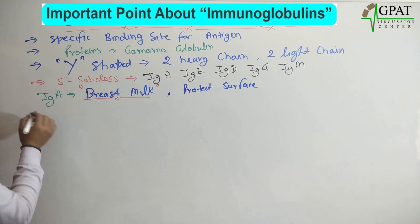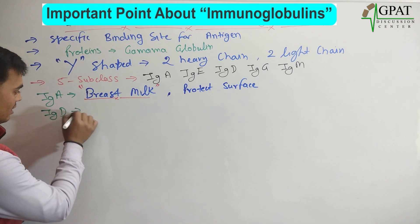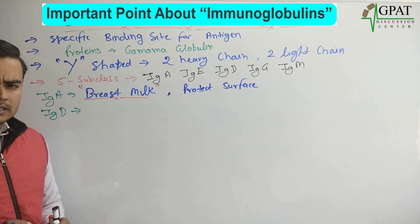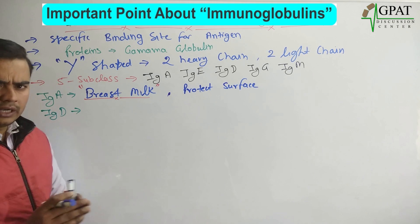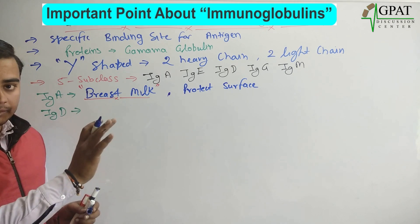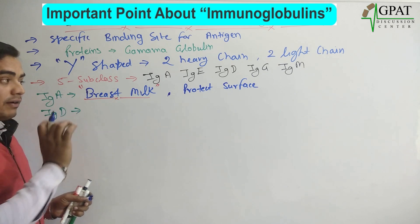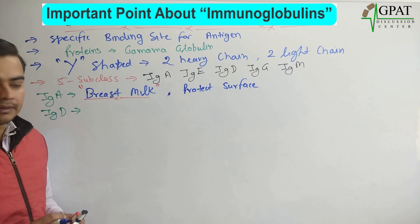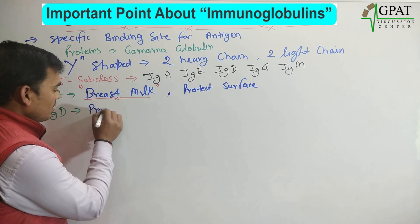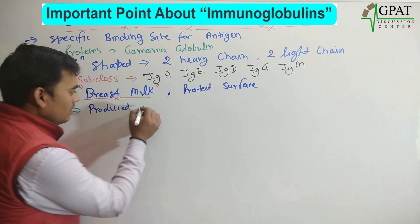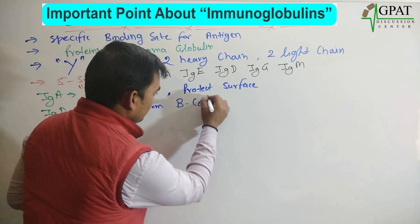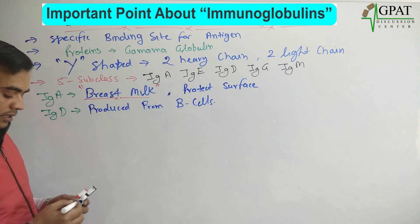Next is IgD. Immunoglobulin D has very low function. It mainly helps with the IgM antibody. IgD works in conjugation with IgM. IgD is mainly produced or secreted from the B cells.